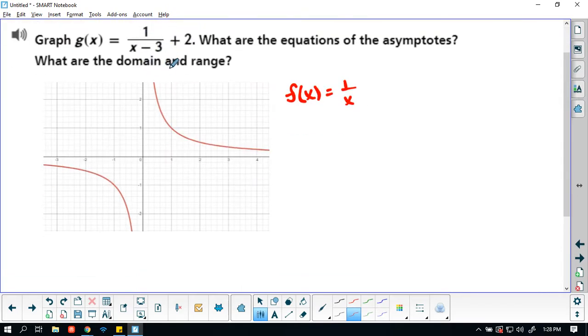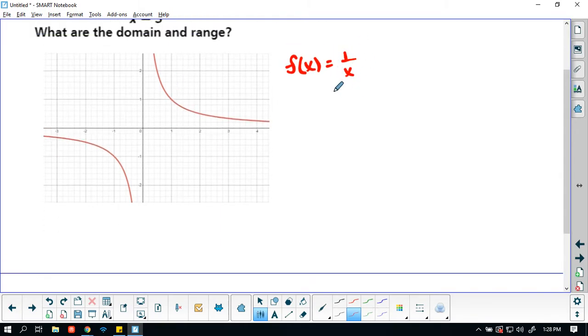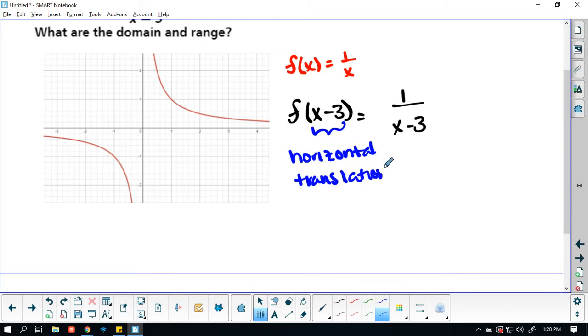We're going to start with the parent function graph. In this case, my parent function graph is f of x equals one over x. We have a horizontal translation and a vertical translation. I know this because here's my parent function. If I change my parent function to f of x minus three, anything in those parentheses will give me a horizontal translation. From previous examples, if you remember, this is a horizontal translation. It lies to us—it says negative three, so we're actually going to translate it over three to the right.